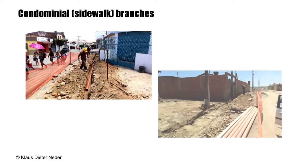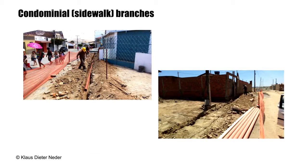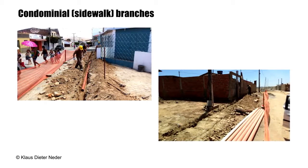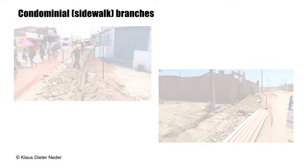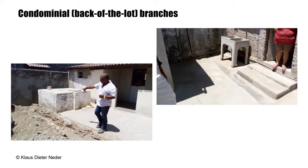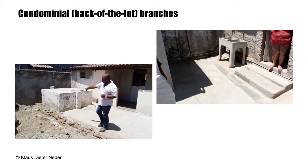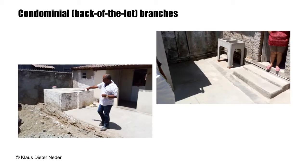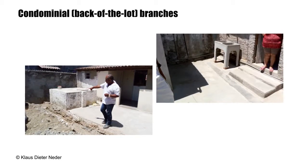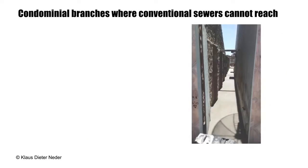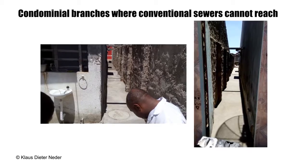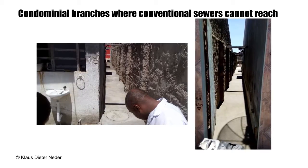Condominium members jointly agree on the location of the condominial branch. If the utility is to maintain the branch, the sidewalk is the preferred location. However, in informal, densely populated, unplanned settlements, or in situations where sanitary facilities are located at the back of the house, the back-of-lot branch is sometimes the only feasible option. It is in these circumstances where the condominial approach is especially beneficial, as it can provide solutions where conventional sewers would not be feasible.